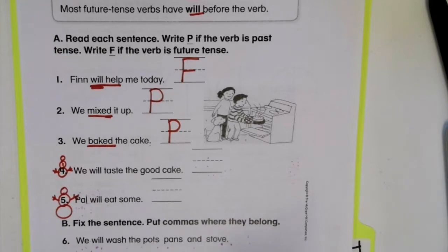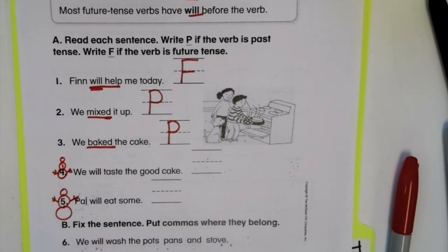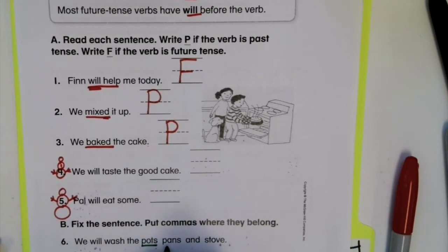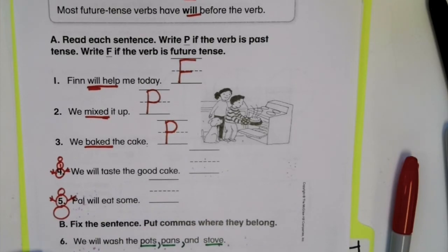Now at the bottom, we have to put commas where they belong with the fix the sentence. So let me use a different color for this. Let's use green. All right, let's read the sentence. We will wash the pots, pans, and stove. Did you hear a list in there? I did. Pots, pans, stove. Remember that our commas have to go after the first two words in our list when I have three of them. Pots, comma, pans, comma, and stove.